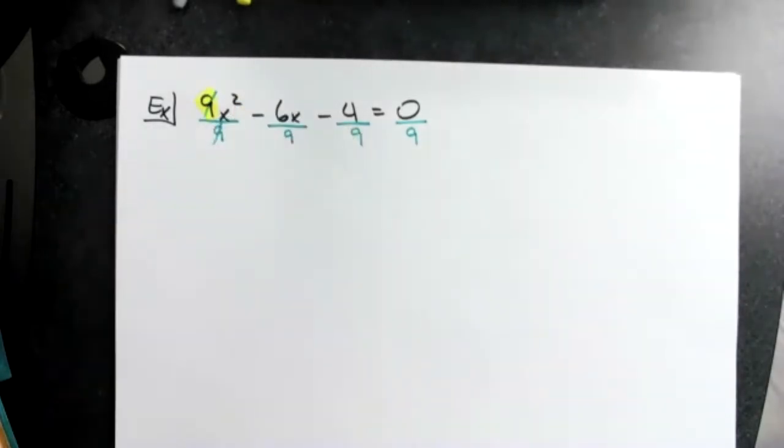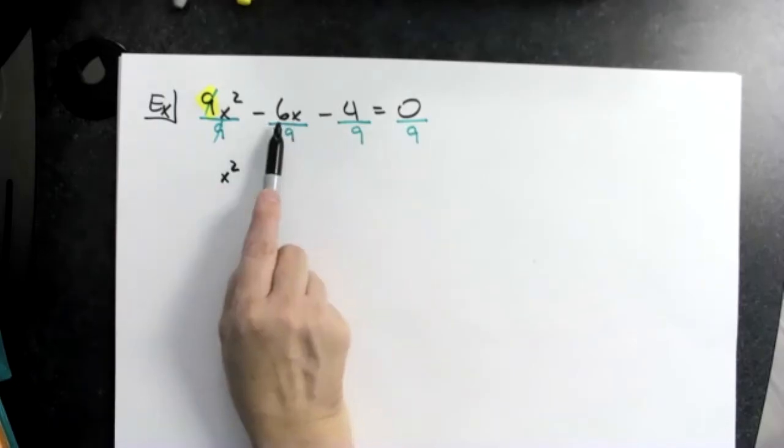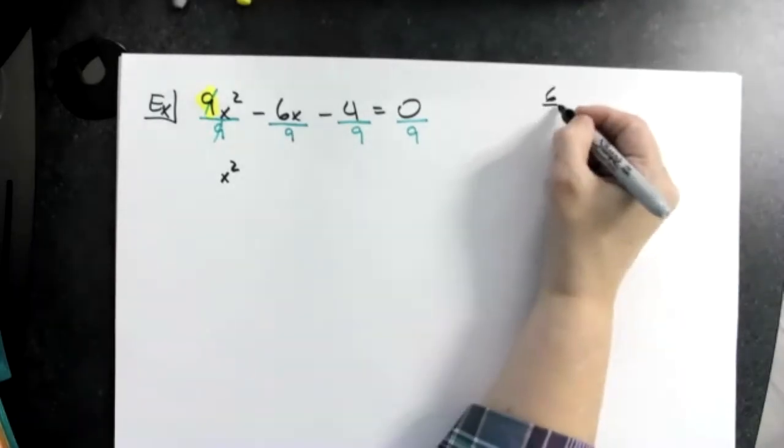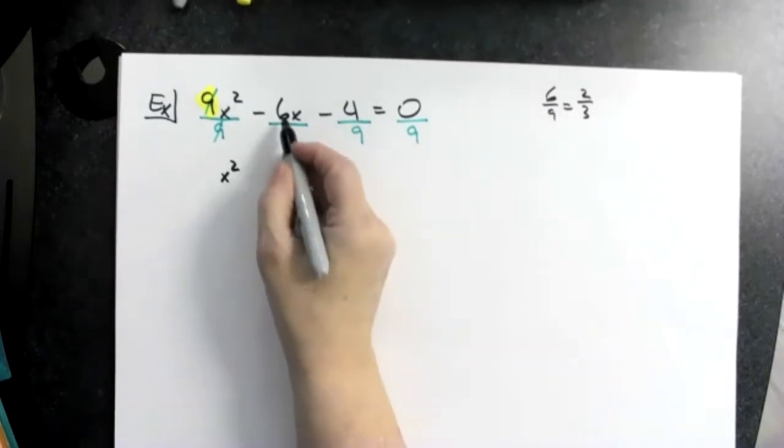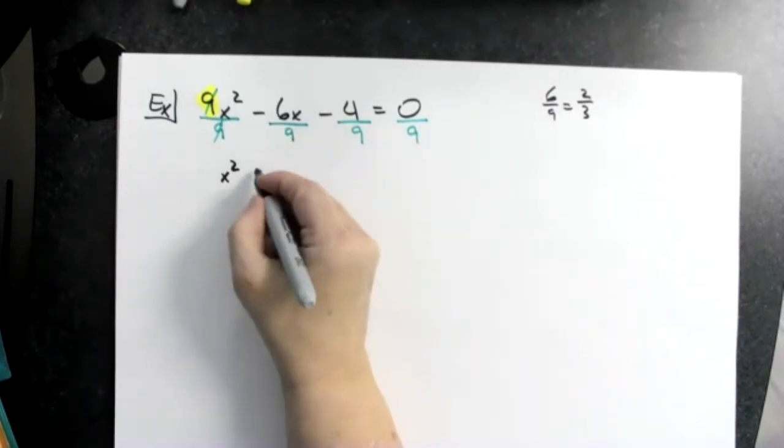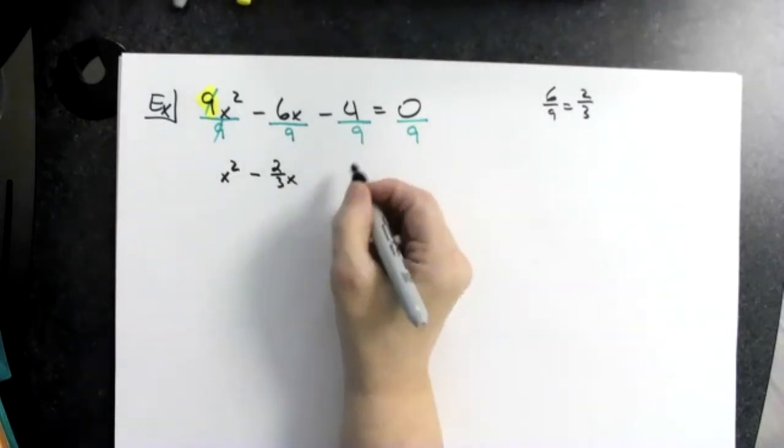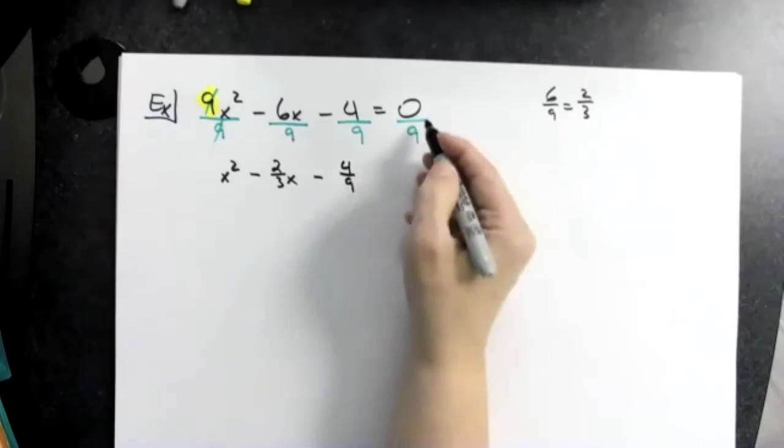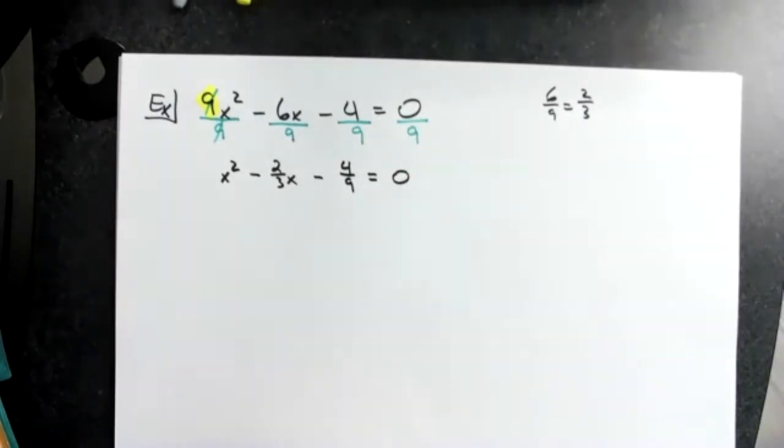Nine divided by nine, which is what we want for that leading coefficient to become one, so that's an x squared. Now what I might do to save some steps here, this would be six over nine, right? Six over nine reduces to what? Divide by three, divide by three—two-thirds. So let's make this two-thirds x. Four ninths does not reduce, and zero divided by nine is zero. So I still have an equation set equal to zero.